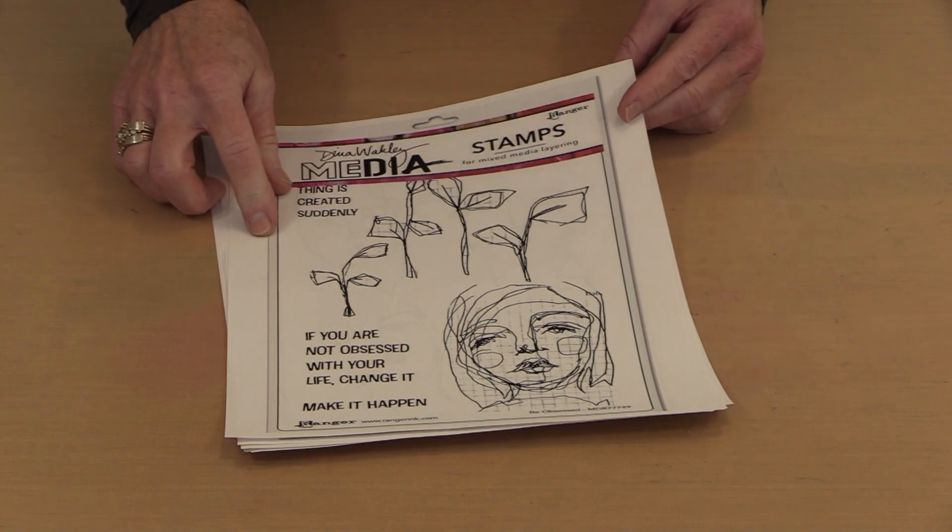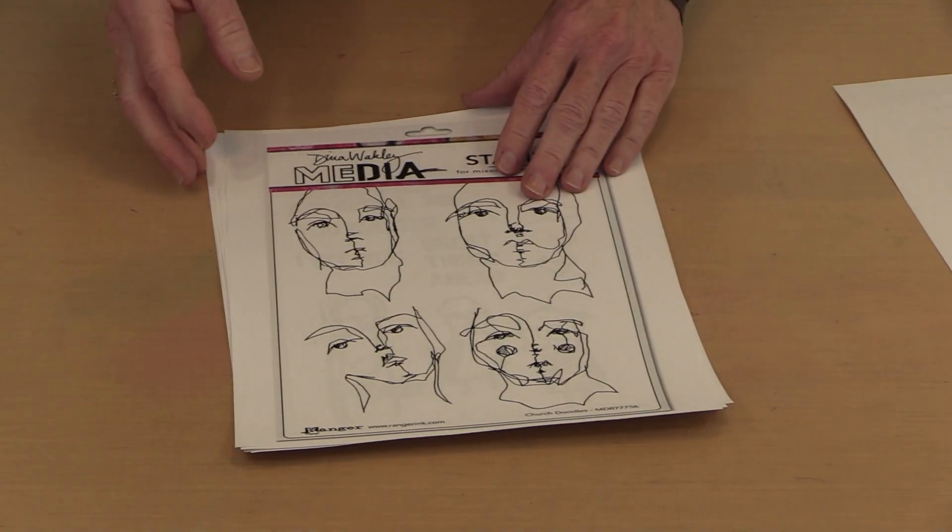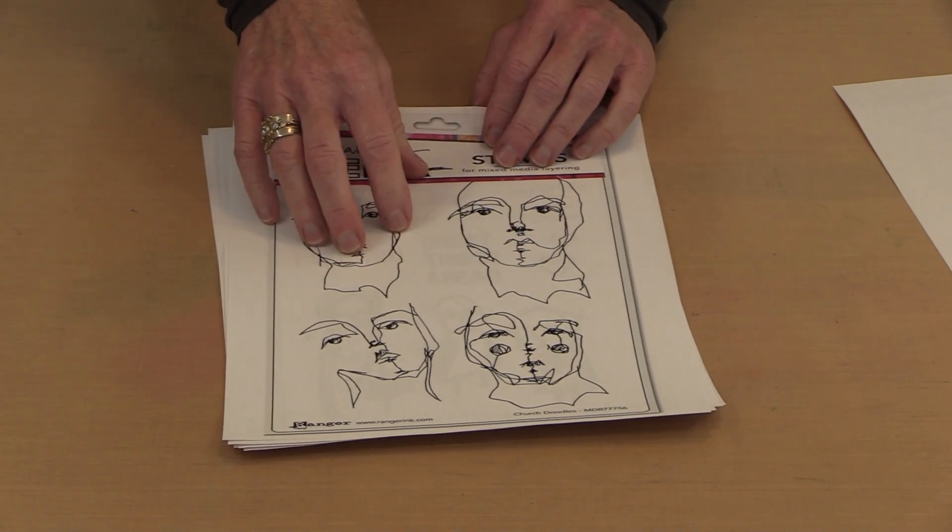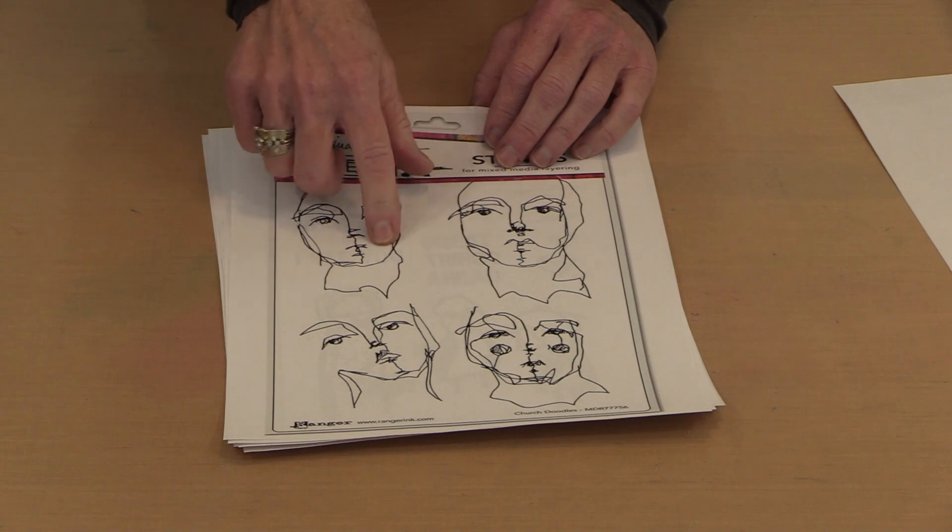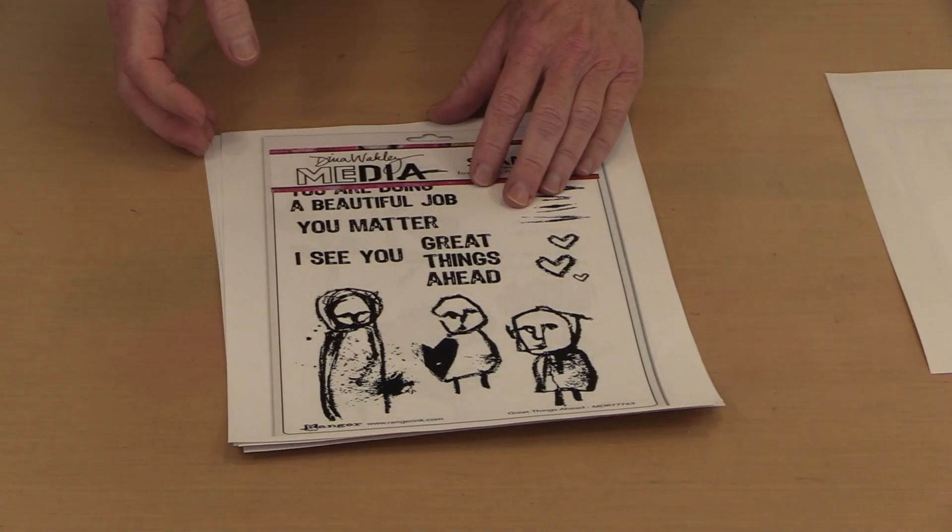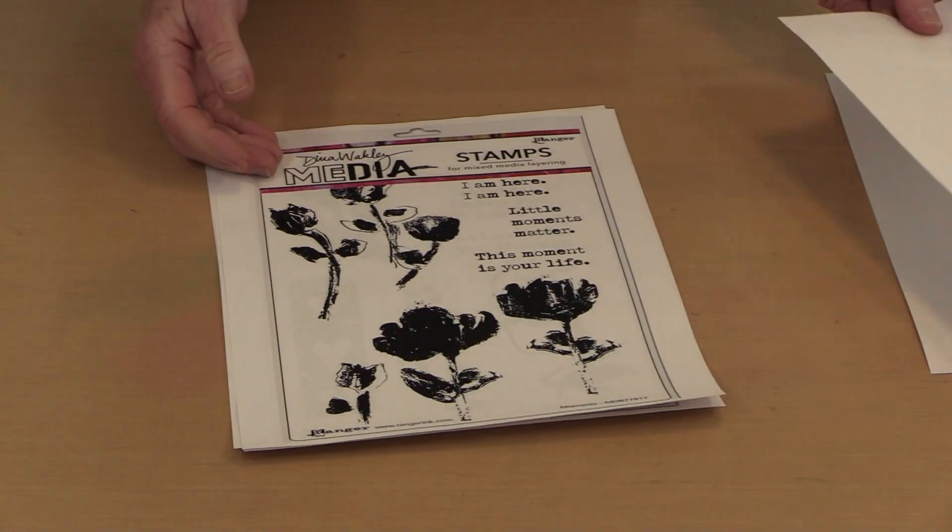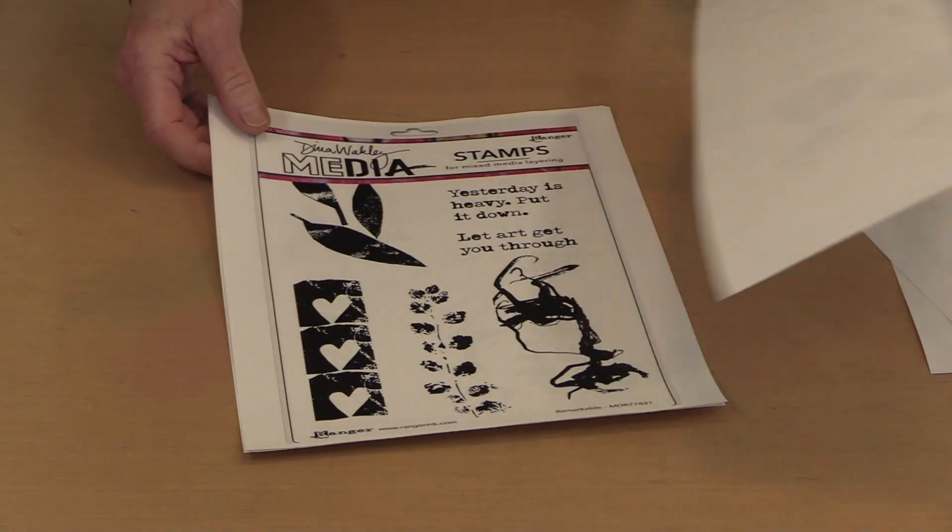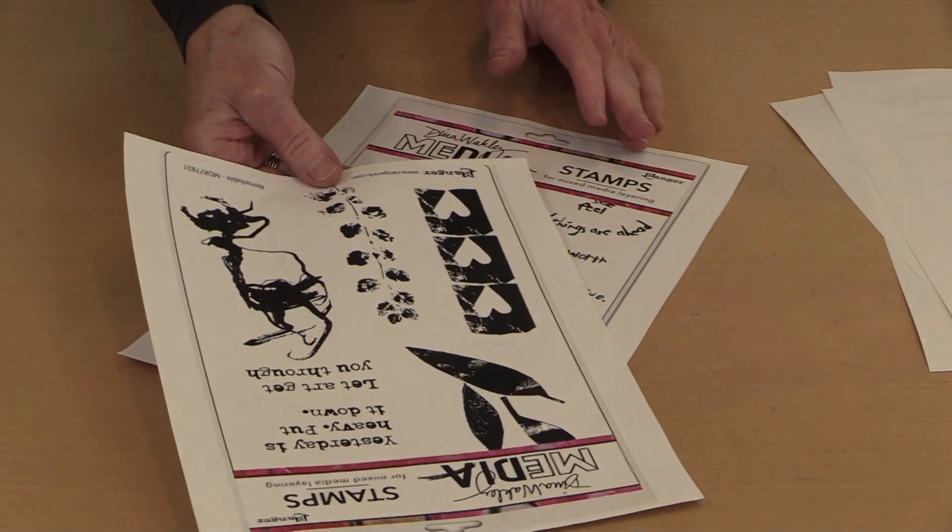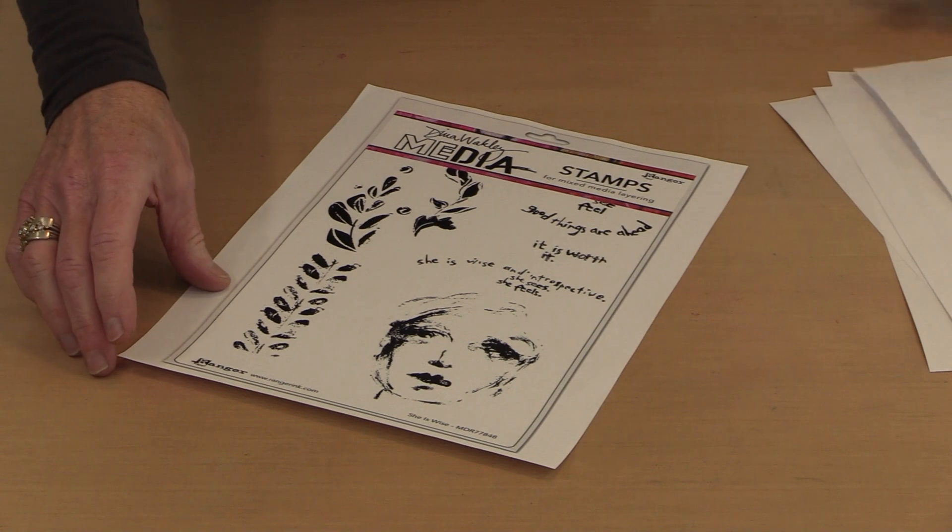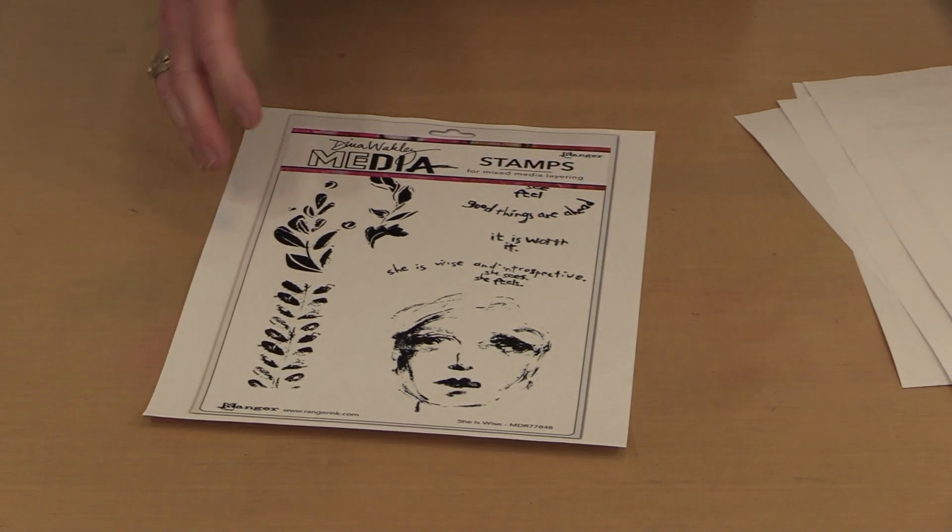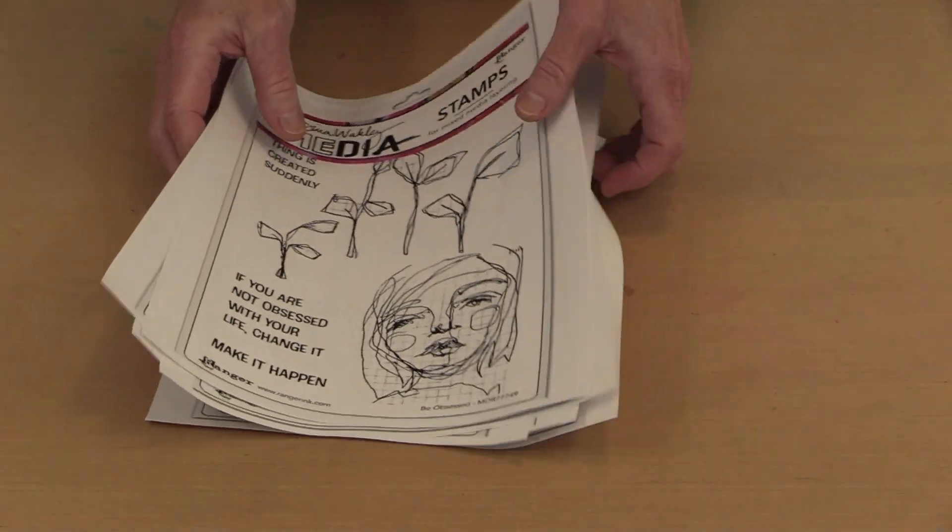This one is named The Obsessed. And then we have Church Doodles. Now you might remember that Dina released Church Doodles as collage paper, and now she's got the same ones. I'm almost positive these are identical. As a rubber stamp. This one is named Great Things Ahead. And then there's Moments. What does that say? I can't read upside down. Remarkable. And then the last one is named She Is Wise. And these are all so very obviously Dina's style that we all love and everybody enjoys using.